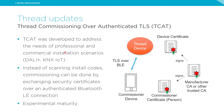For Thread: we added experimental support for Thread commissioning over authenticated TLS (TCAT). This addresses needs in professional and commercial installation markets, where scanning QR codes device-by-device is tedious. TCAT allows wireless commissioning by exchanging secure certificates over an authenticated Bluetooth LE connection — certificates signed by a CA on both the device and the commissioner — enabling a single commissioner device to commission an entire installation wirelessly.